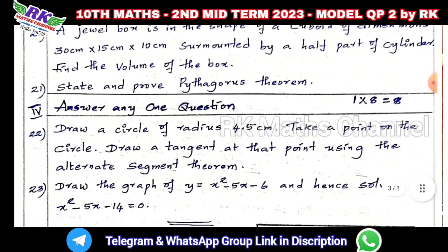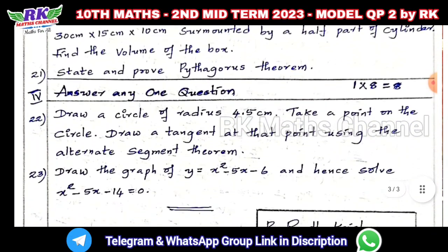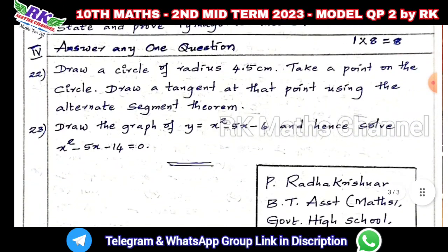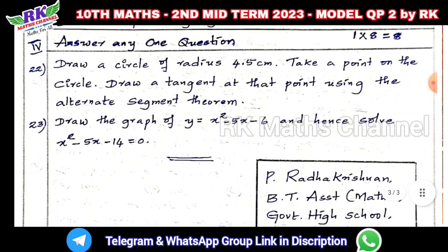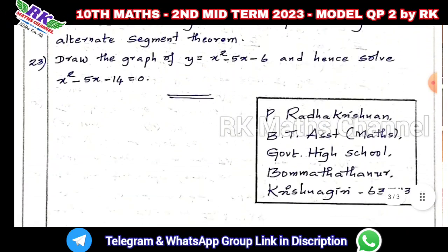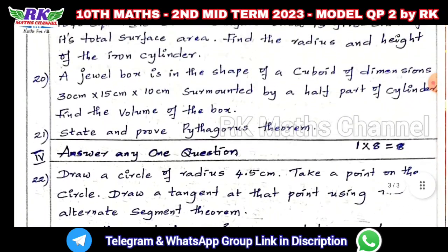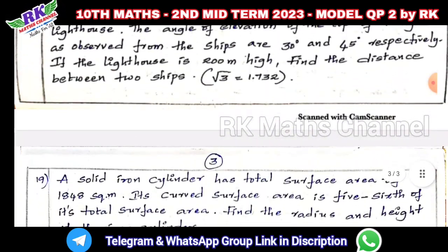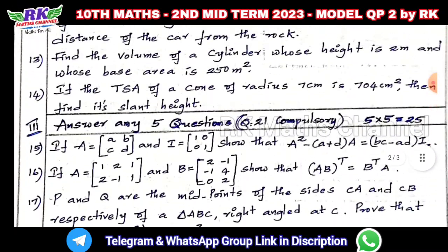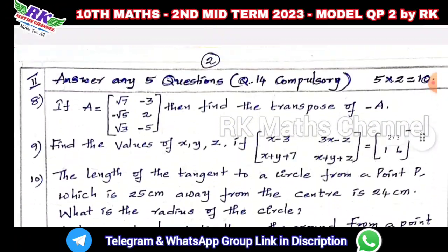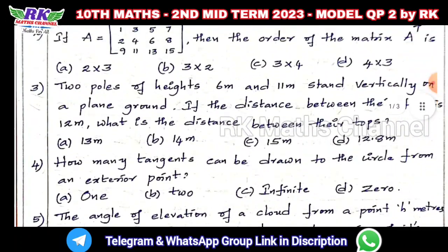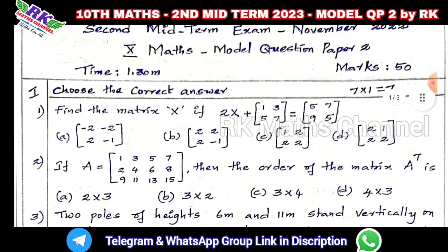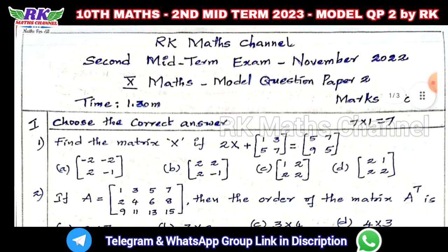Next, answer any one question. You can find the geometry and graph section in the question paper. If you find the question paper useful, please like and subscribe, share. The question paper PDF link is in the description below — you can download it from the link in the description. Thank you.